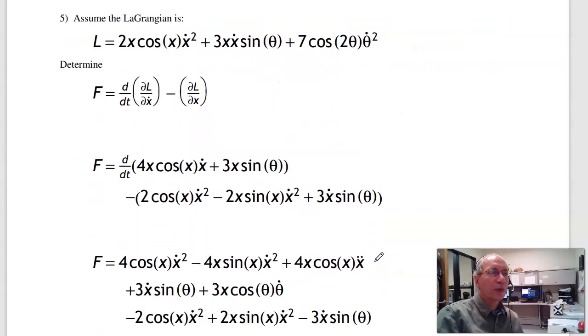Problem 5 is about full derivatives and partial derivatives. For the partial derivative with respect to x-dot, anything that's not an x-dot you ignore—treat it like a constant. So here's an x-dot. That gives you 4x cos(x) times x-dot. Here's an x-dot. And that's it.